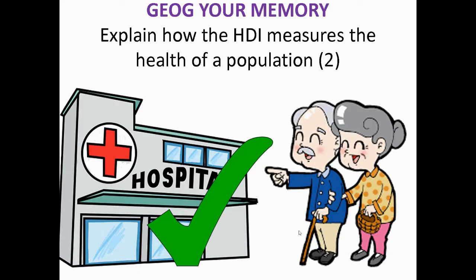This question is asking you in particular about HDI. The question says: explain how the HDI measures the health of a population. You first need to know what different factors HDI uses to measure development, then think about which one of these factors links specifically to health for that first mark.